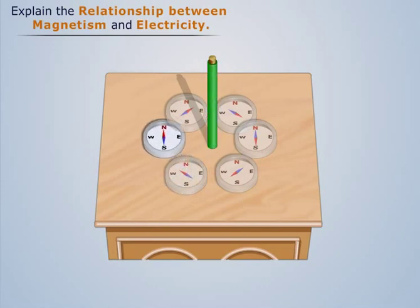Let's understand the reason behind this deflection. When current starts flowing in the wire, it sets up a magnetic field around it.